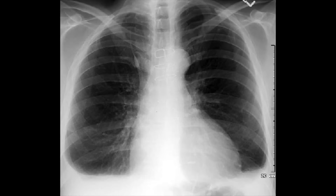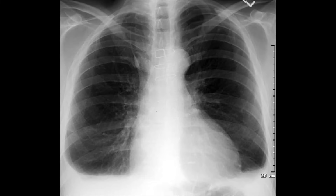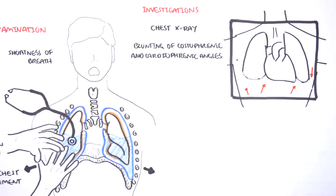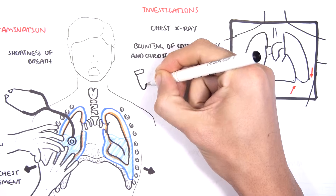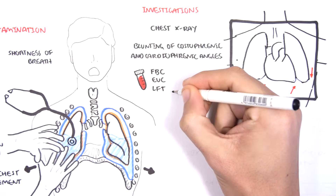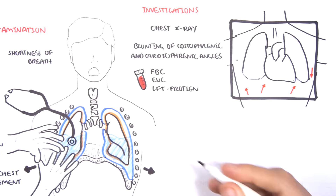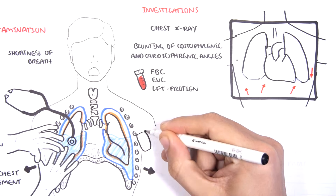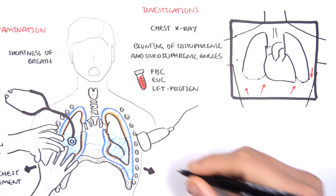Here is a less subtle one, a bilateral pleural effusion. You can see blunting of the costo and cardiophrenic angles bilaterally, and also the meniscal sign. If someone presents with suspected pleural effusion of unknown cause initially, blood tests such as full blood count, EUC, and LFTs can be helpful.